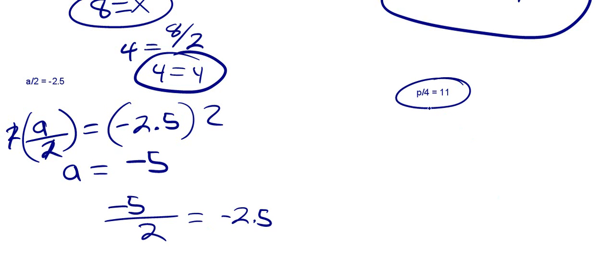Then we've got p. We're dividing p by 4, some number p. We're going to get 11. Well, to figure out what p is, we're going to multiply both sides by our denominator, which is 4.